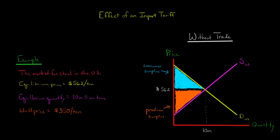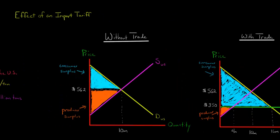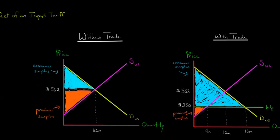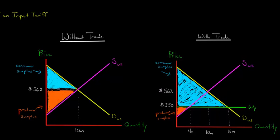Let's say now that the world price of steel is $350 a ton. That's cheaper than the equilibrium price in the US, so the US is going to be a net importer of steel. It is going to import steel. So I'm going to show you how it changes when we import steel.